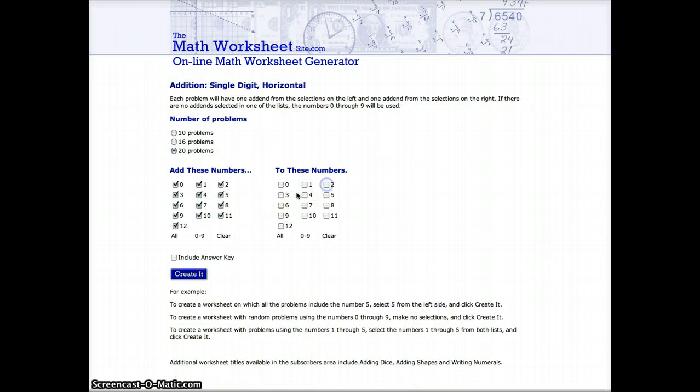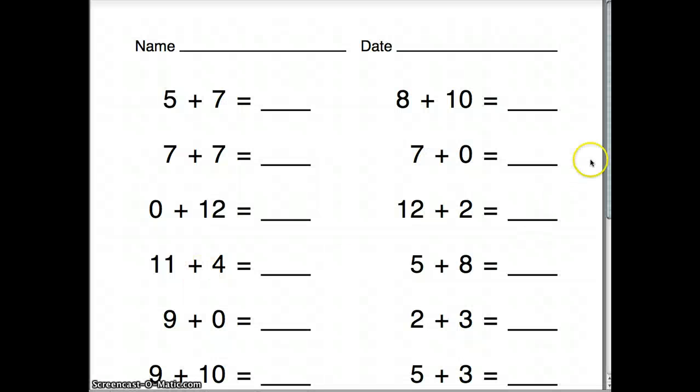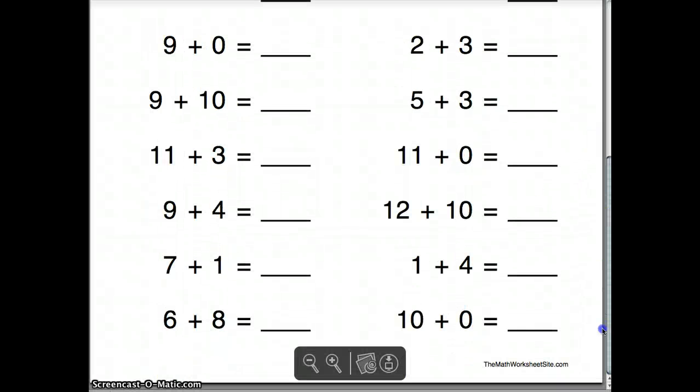Once they've mastered that, once they're confident with that, we can pick adding threes. And then after they're confident with that, mix in some adding ones and adding twos. Now carry on in this way until they're confident all the way up to adding tens and can happily manage mixed questions all the way up to adding tens at the rate of about 20 questions per minute. So this is a sheet with some mixed questions.